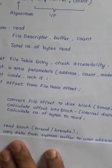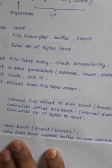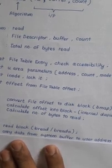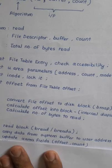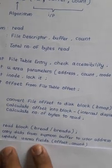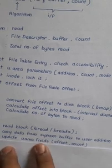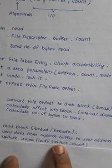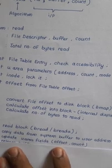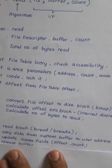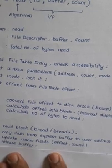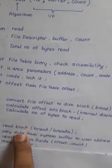Once the file data is ready in the buffer cache, our task is to copy it from the system buffer to the user address. That is the next step in this algorithm. After copying the data we update the u-area fields — the offset is modified and the count is decreased to reflect how many bytes have been read and how many further bytes remain to be read. After that we release that buffer.